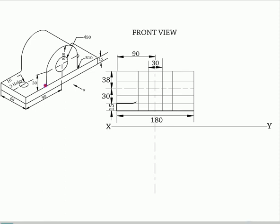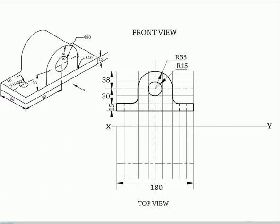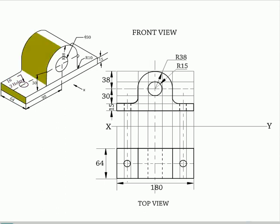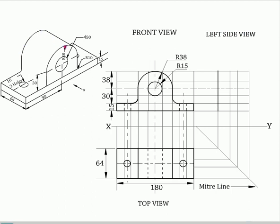Show the visible edges by thick line and hidden edges by dotted line. Draw the miter line. To draw the left side view, draw the miter line and projectors from the top view through the miter line. Now draw the projectors from the front view horizontally and complete the side view, showing the dimensions of width and height.